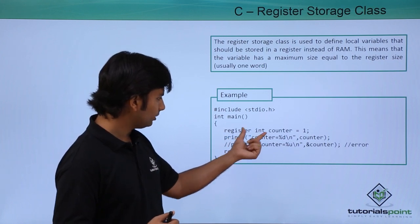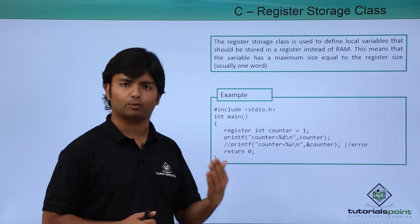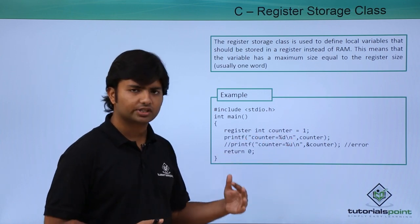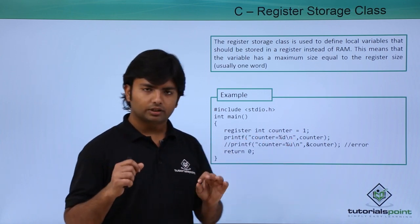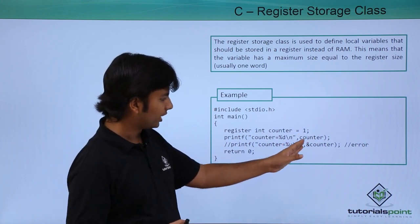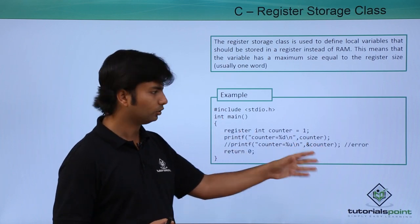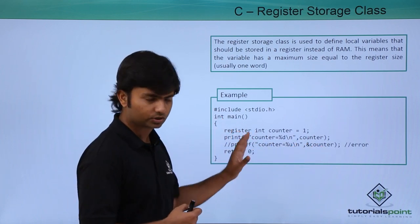So, if I say counter is equal to 1, if I print the value, I will simply get 1, which is the value because it is of integer type. But since it is not allocated in the RAM, if I try to access the address of this counter, which is of register storage class, we will get an error.